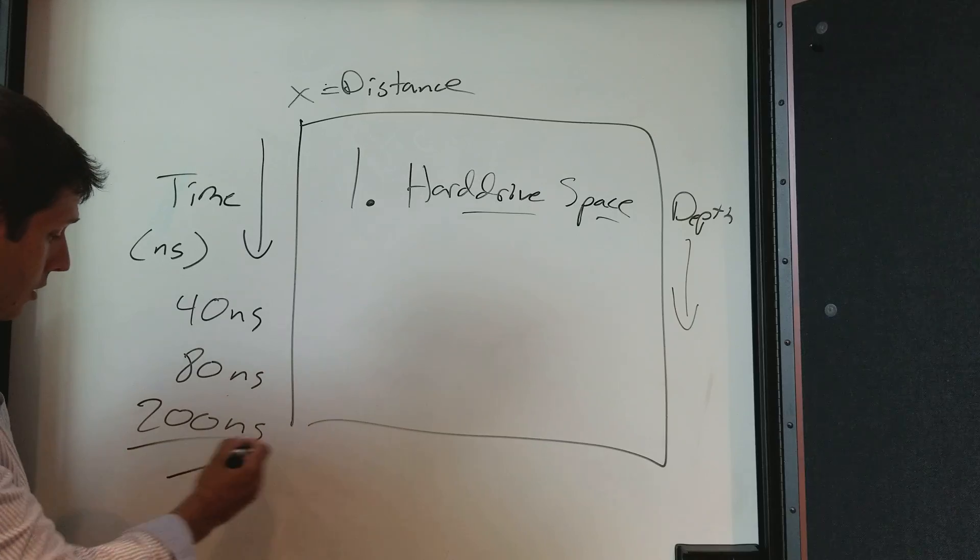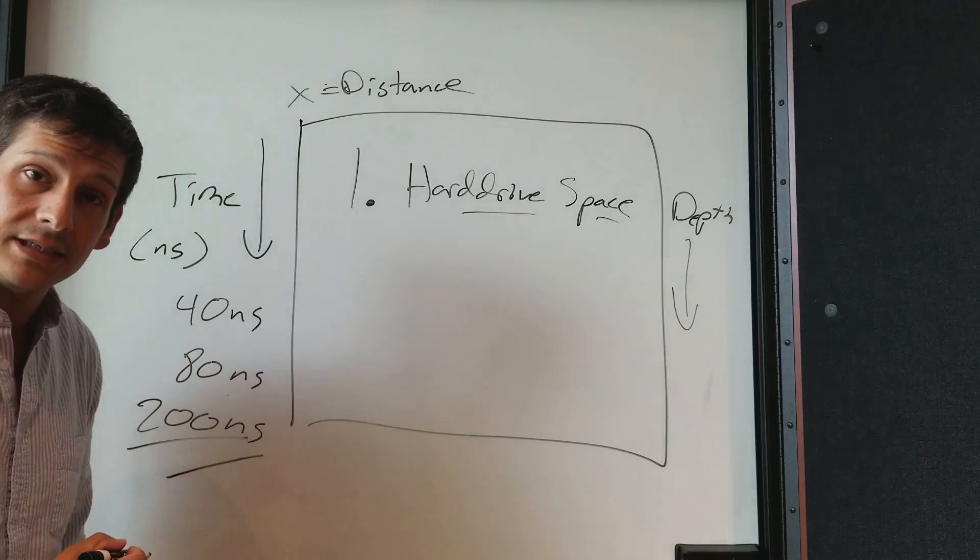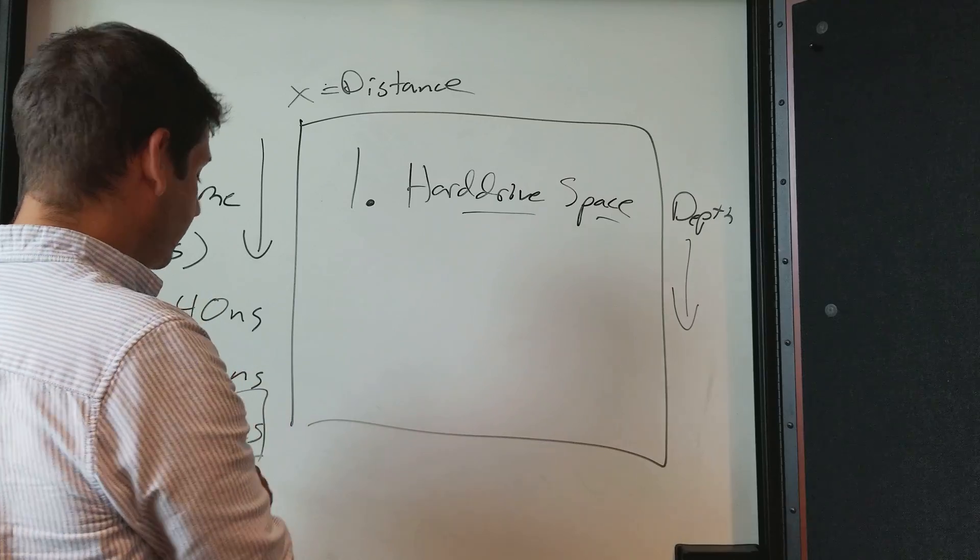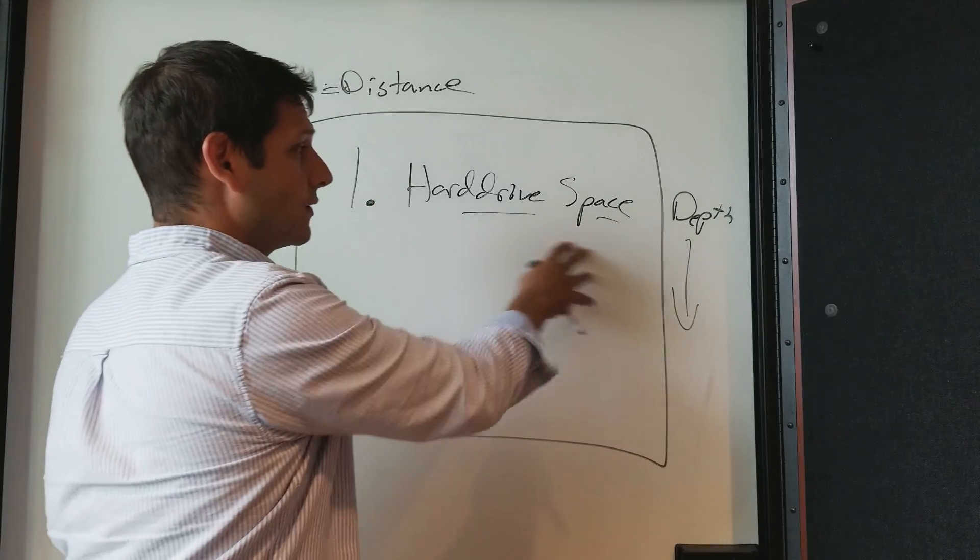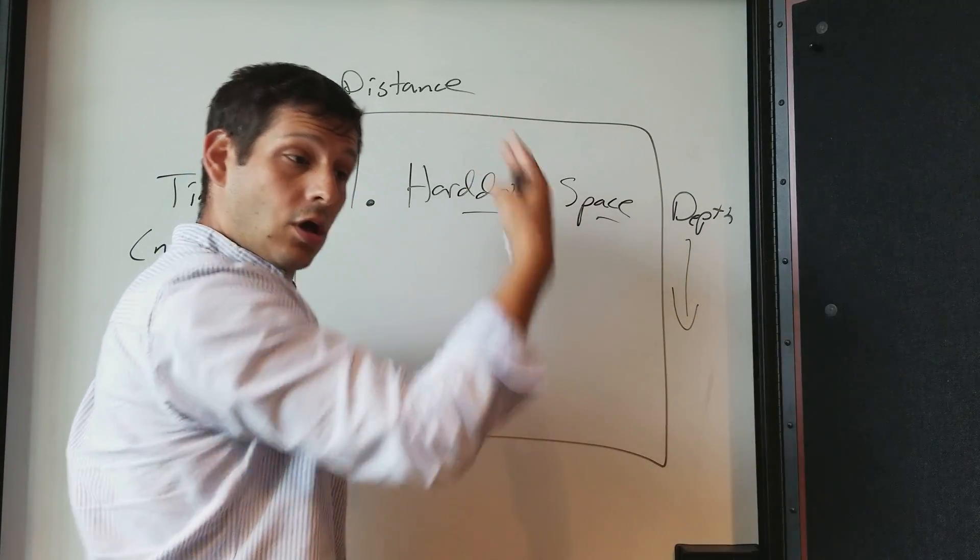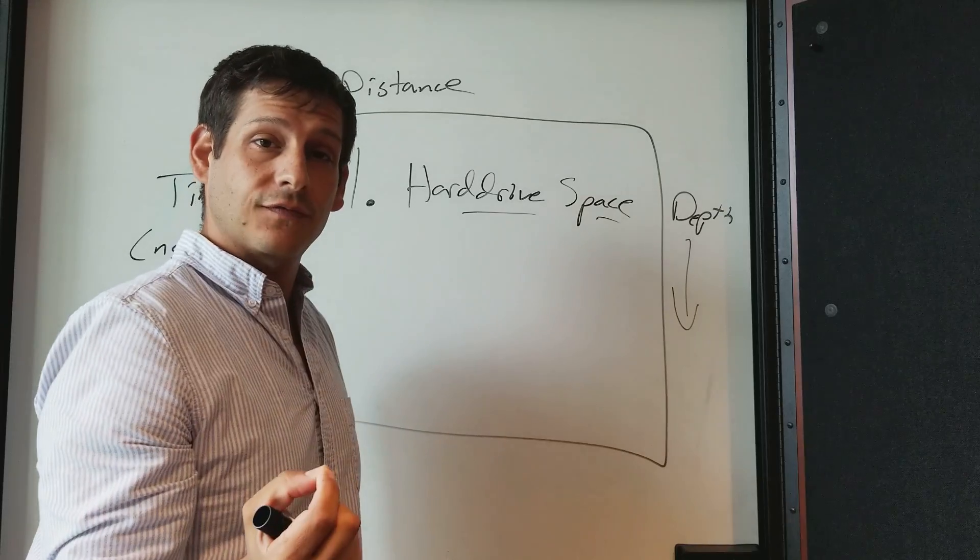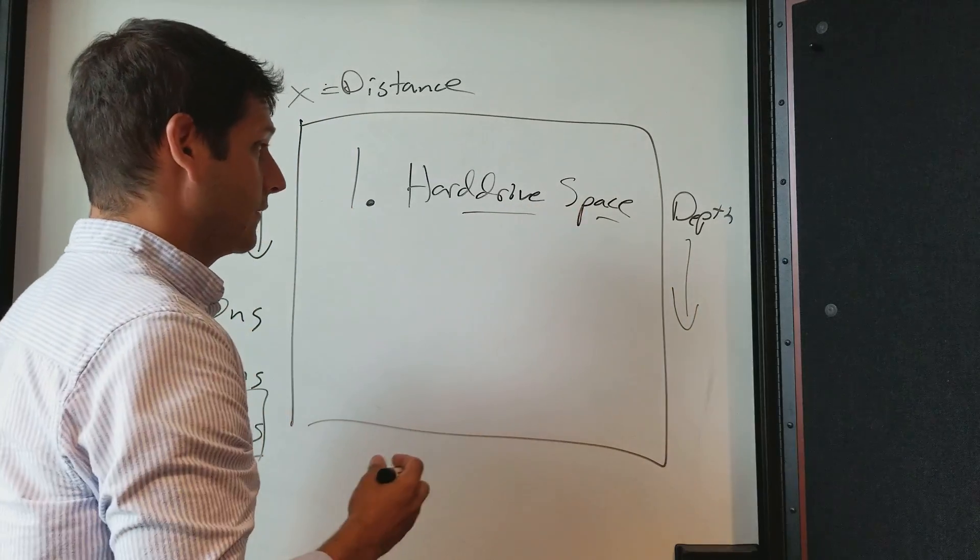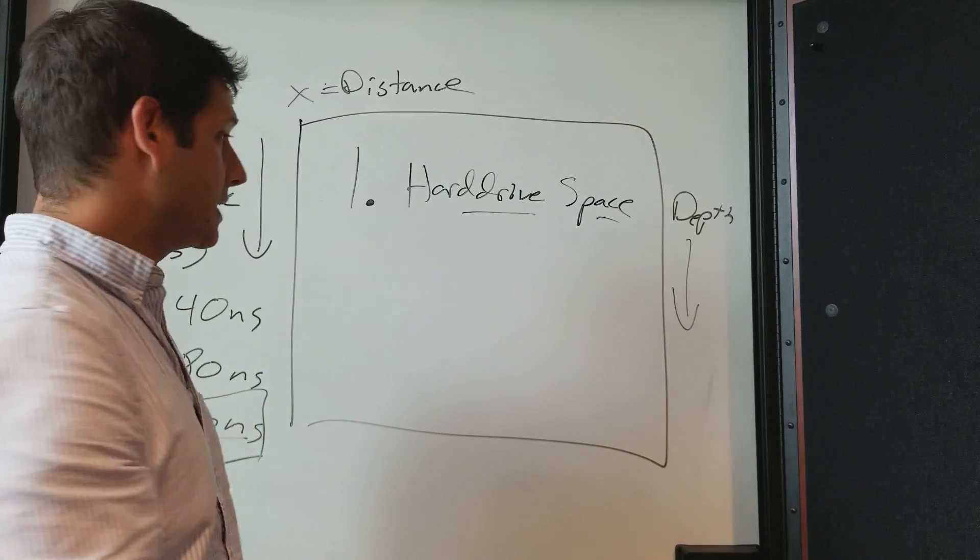This might be a holdover concern from starting GPR over a decade ago, when we had a lot of problems with space. But it does take up more. The longer your time window is, so 200 instead of 100 for example, the more hard drive space it's going to take up. The longer it's collecting data, the larger your file is, and that'll take up some hard drive space. So that's the least impactful these days.